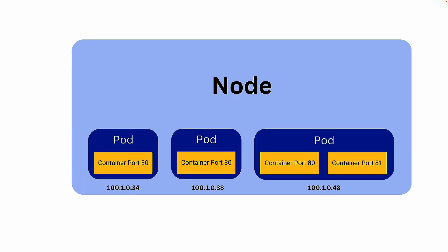Inside a node we can have multiple pods, and inside a pod we can have multiple containers. Each pod has its own IP address, and containers inside the pod always share the IP address from the pod. For example, in the first pod the container will share IP address 34, and in the third pod both containers will share the same IP address, which is 100.1.0.48.